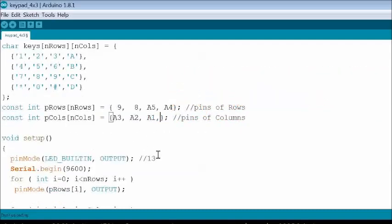Then, assign Arduino pin number for 4th column. Now, Arduino pin numbers are assigned for 4 rows and 4 columns.